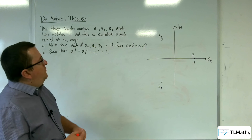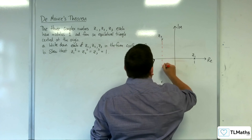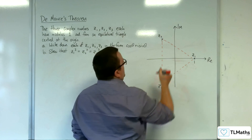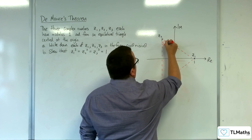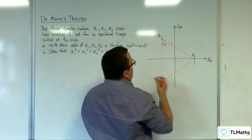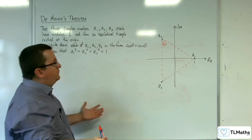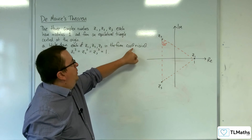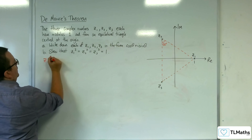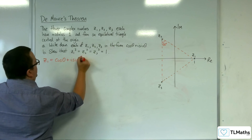So if they are making an equilateral triangle and I join them up, then we know that's going to be 60 degrees or pi over 3. So Z1 is going to be pretty easy because it's just 1 — theta in this case will be 0. So Z1 is equal to cosine of 0 plus i sine 0.